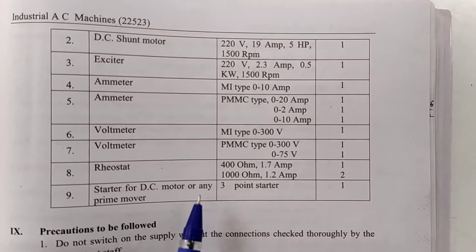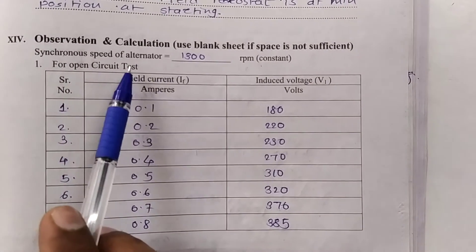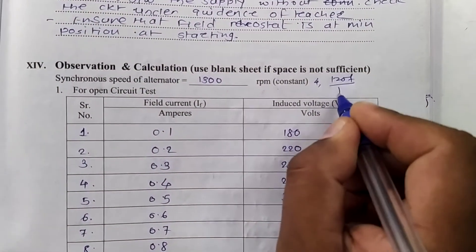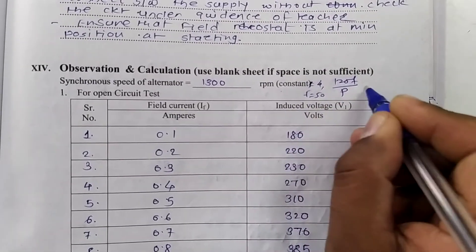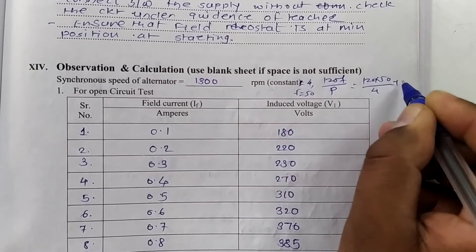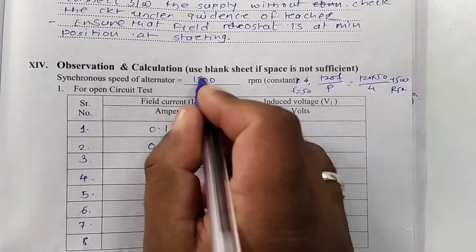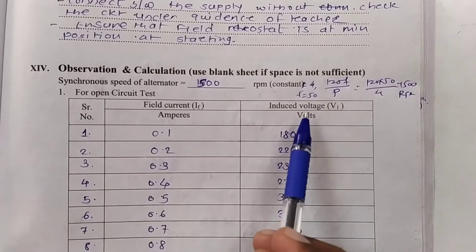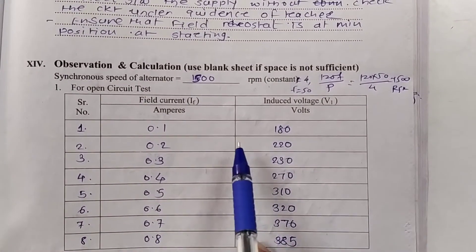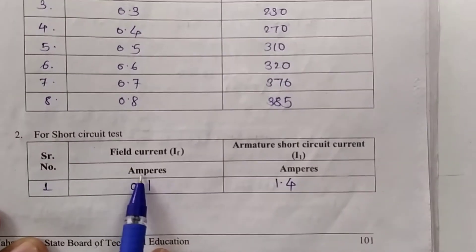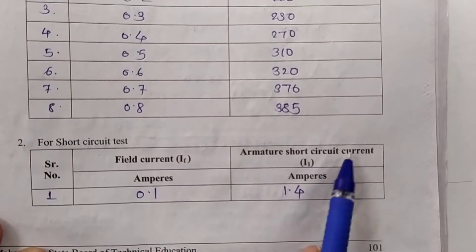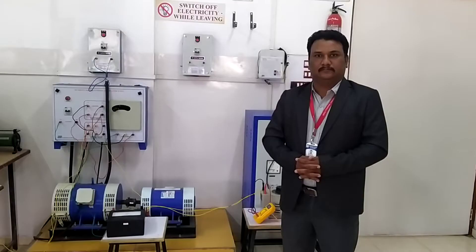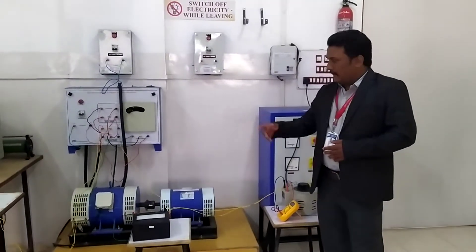For observations and calculations: the synchronous speed of the alternator is calculated here. For 4 poles, it is 120F upon P — frequency is 50 Hz, poles is 4 — so synchronous speed is 1500 rpm. For the open circuit test, the observation table records field current in amperes and induced voltage in volts. For the short circuit test, only one reading is taken: field current and armature short circuit current.